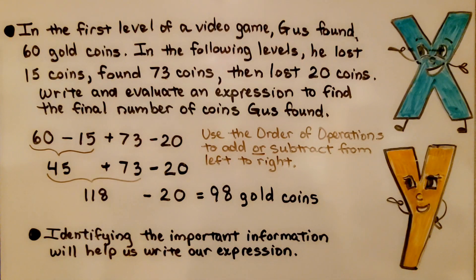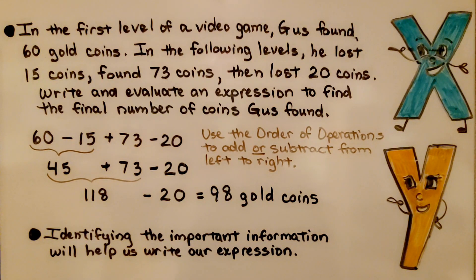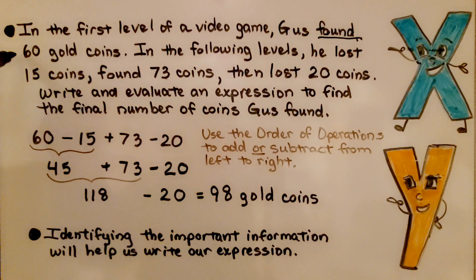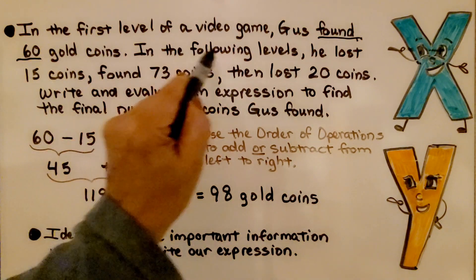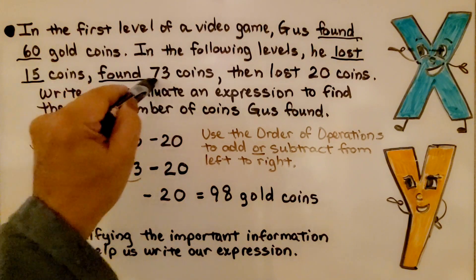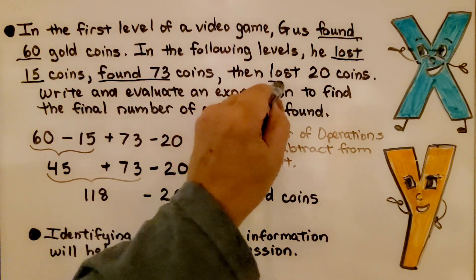In the first level of a video game, Gus found 60 gold coins. In the following levels, he lost 15 coins, found 73 coins, then lost 20 coins. Write and evaluate an expression to find the final number of coins Gus found. The first thing we want to do is identify the important information to help us write our expression: he found 60 gold coins, then lost 15, found 73, then lost 20.